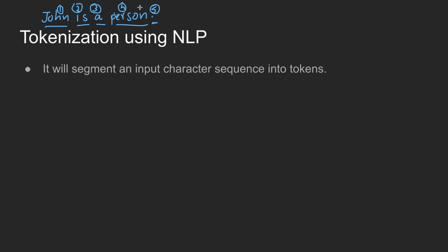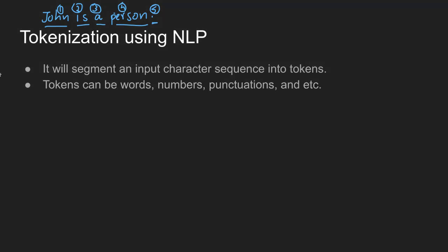To understand tokenization, we look at the sequence of characters. We divide a sequence of characters to separate each part — for example, separating one person's name from another — and that gives us the tokenization output.